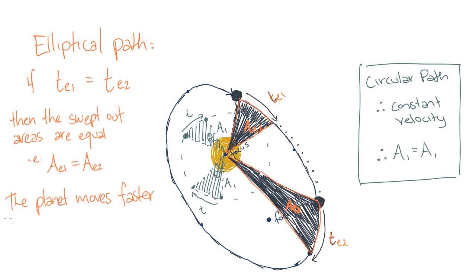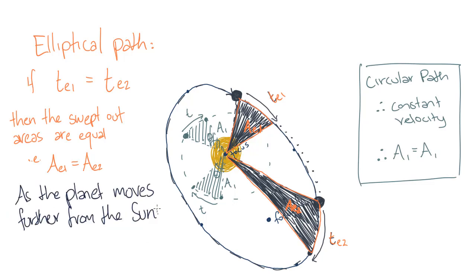We already know this is true from conservation of energy. As the planet moves further away from the Sun, the kinetic energy decreases as the potential energy increases.